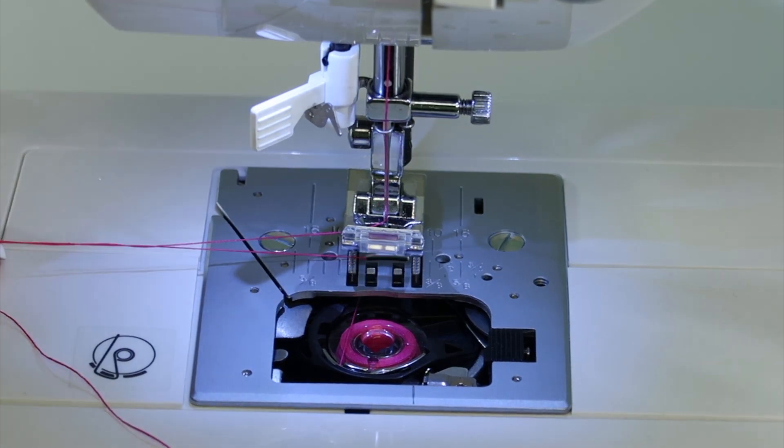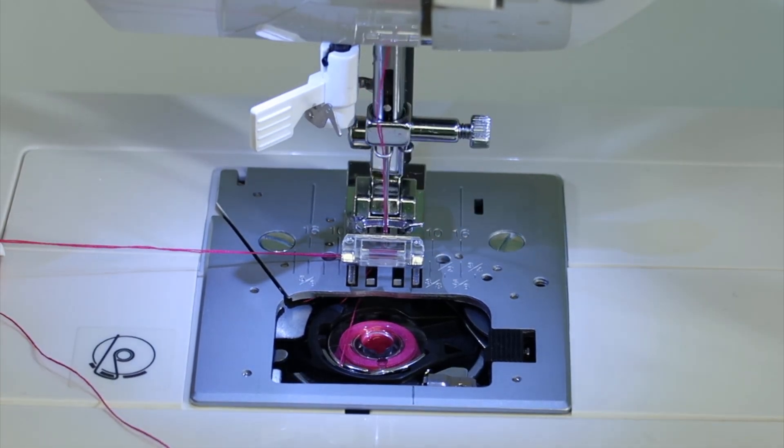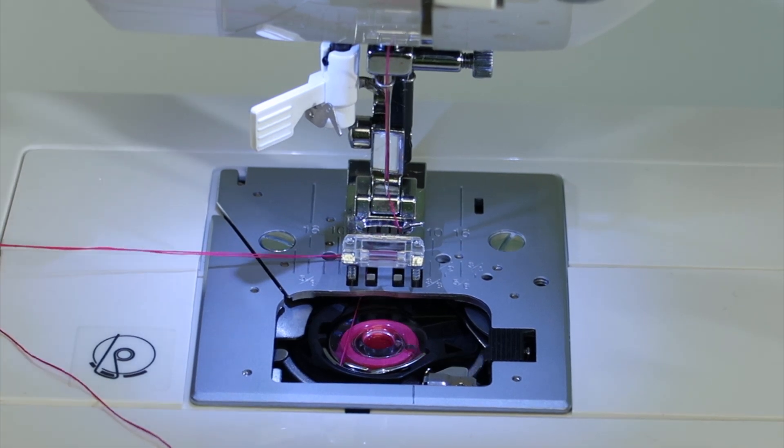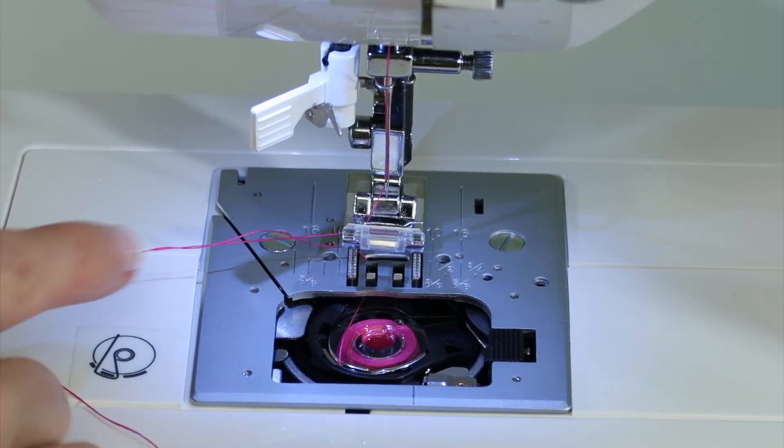Now that you know what to watch for, needle goes down, thread gets wrapped around the bobbin. That's how the two kind of play jump rope together and then there's our second stitch.